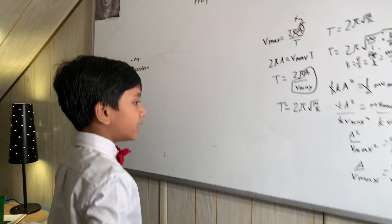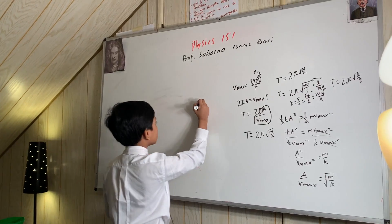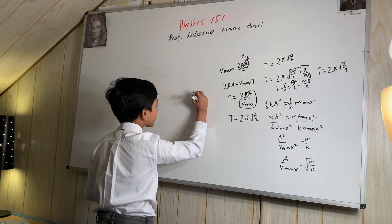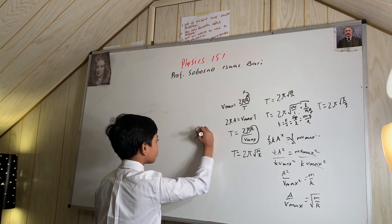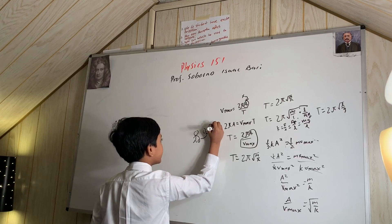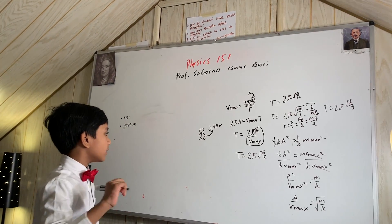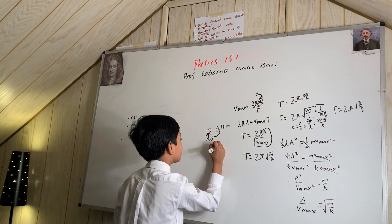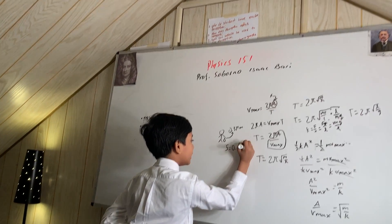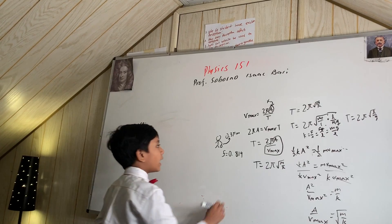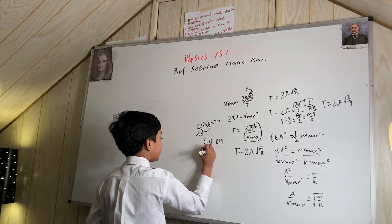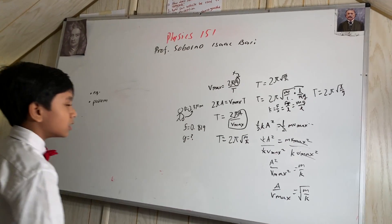Let's solve a problem with this equation. A guy is holding a rope with 30.371 meters of length, and the frequency of the pendulum he is holding is 0.819. We have to find what the gravitational acceleration at his location is.